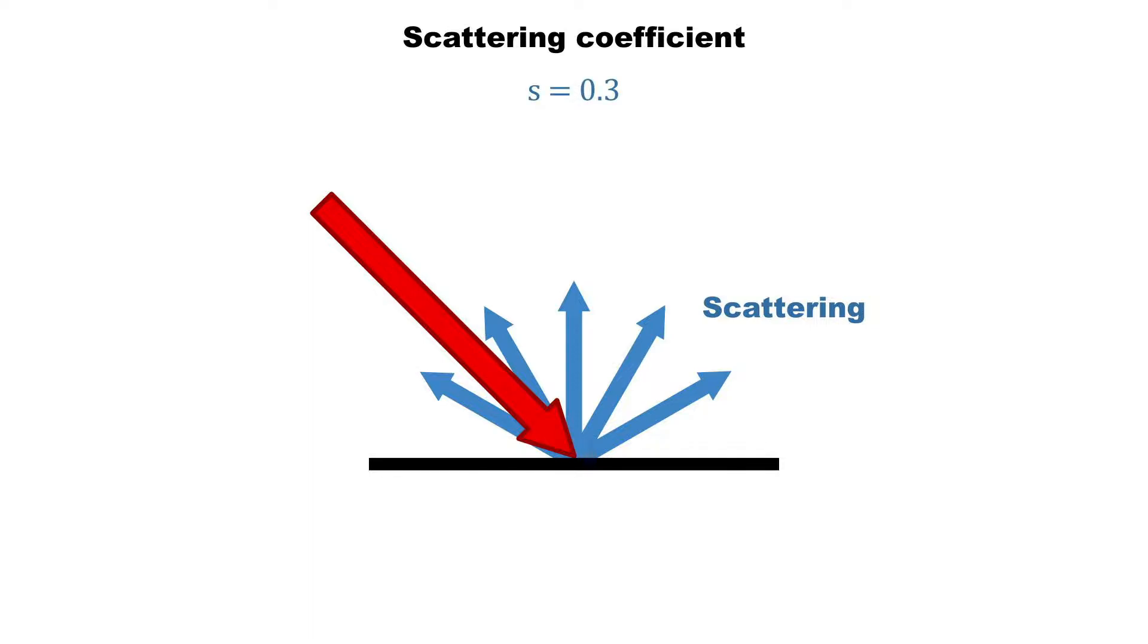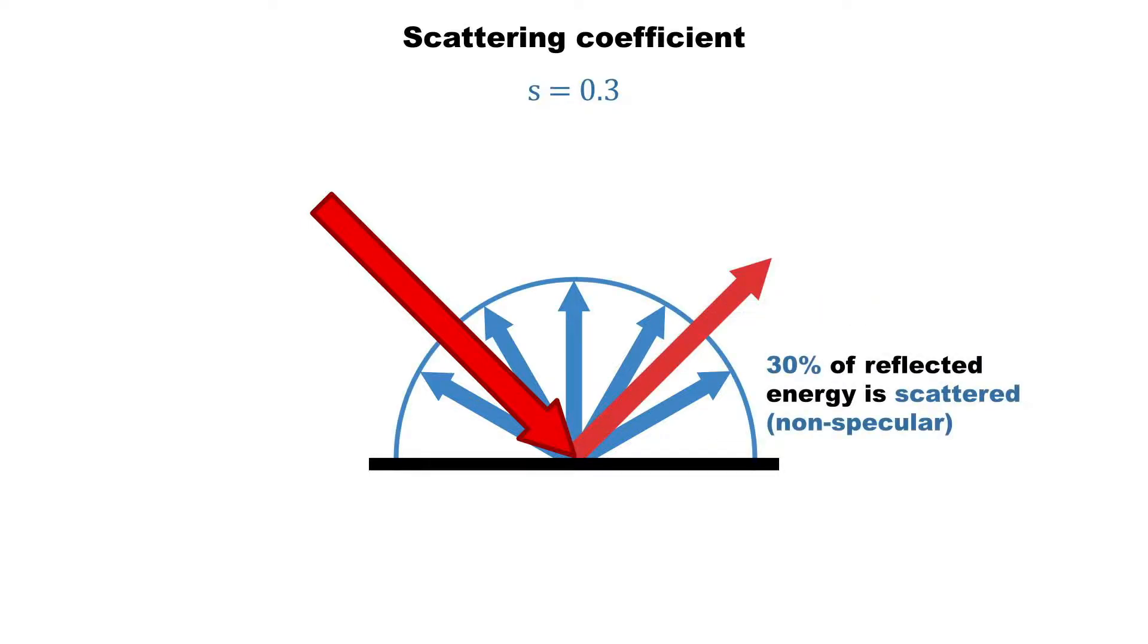In this example, we show a scattering coefficient of 0.3. This indicates that 30% of the reflected energy is scattered, that is, reflected non-specularly.